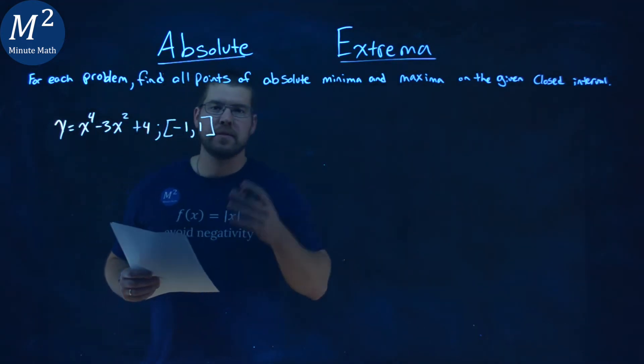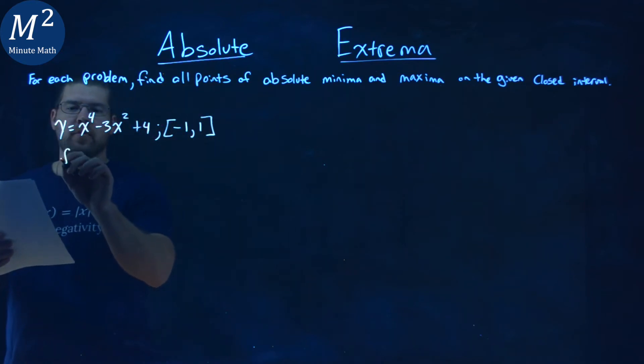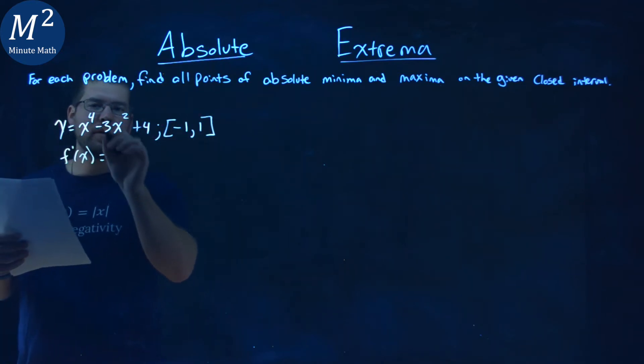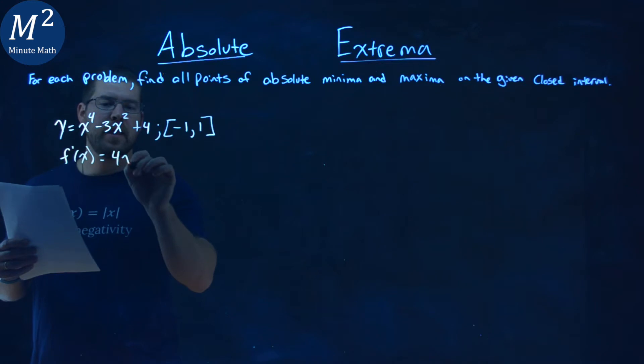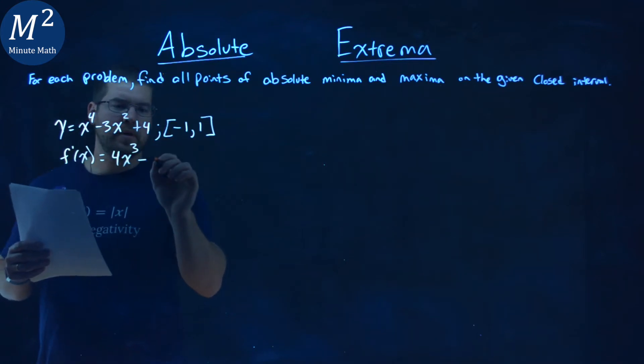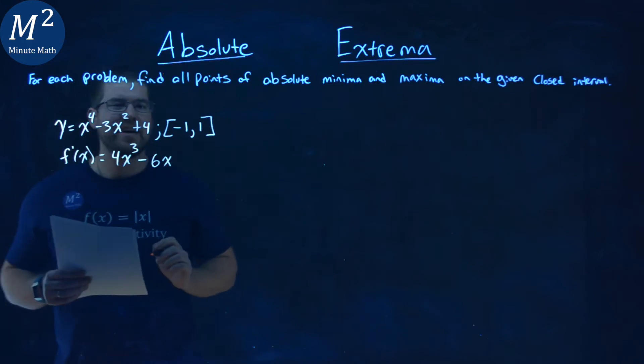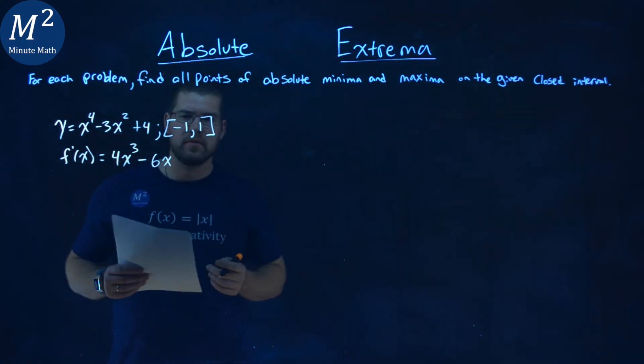The first thing I'd like to do is find my derivative. f prime of x here is equal to, using the power rule, 4 comes down, x to the third power minus 2 times 3 is 6x, and then the derivative of the constant is 0.